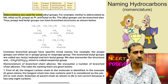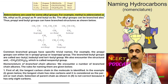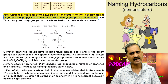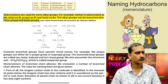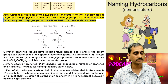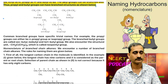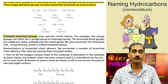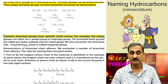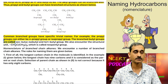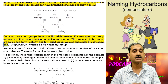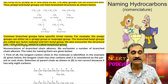Abbreviations are used for some alkyl groups — for example, methyl is abbreviated as Me, ethyl as Et, propyl as Pr, and butyl as Bu. Alkyl groups can be branched also; thus propyl and butyl groups can have branched structures. Common branched groups have specific trivial names: the propyl groups can either be n-propyl or isopropyl. The branched butyl groups are called secondary butyl, isobutyl, and tert-butyl. We also encounter the structural unit CH2C(CH3)3, which is called the neopentyl group.